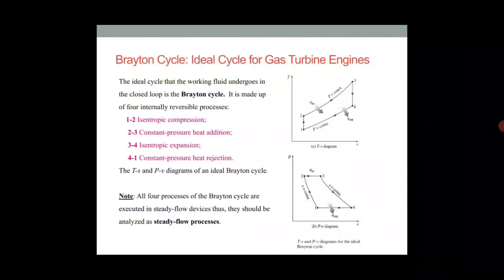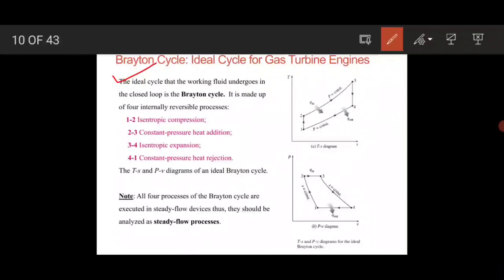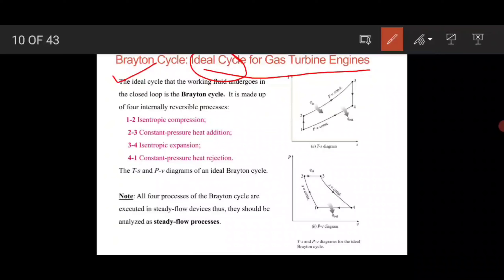We study the ideal cycle first because in ideal theory we neglect losses — the flow is assumed inviscid, incompressible, and irrotational. Whatever input is given, you get the full output without losses. The fundamentals learned in the ideal cycle are then applied to the actual cycle. If we assumed real conditions from the start, we'd need to account for all losses, making it very complex and difficult for students to understand.